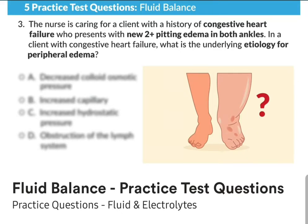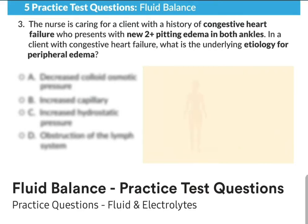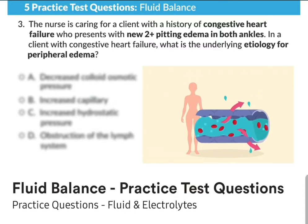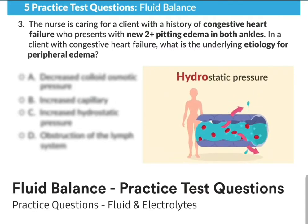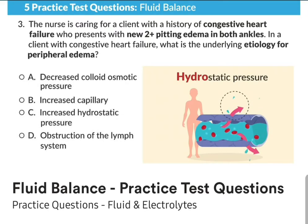This question asks for the underlying etiology — basically the cause — of peripheral edema. The cause is heavy fluid pressure all over the body, or in fancier terms, hydrostatic pressure. Hydro meaning fluid, and pressure meaning pressure. So option C, increased hydrostatic pressure, is the most correct.